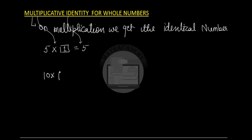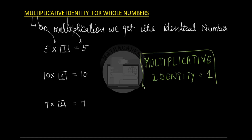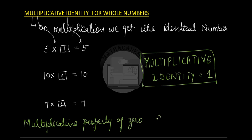Similarly, 10 times 1 gives you 10. The number 1 is called the multiplicative identity because when we multiply any number by 1, the product is identical to the first number. There is also one very important property of 0: when any number is multiplied by 0, the result is always 0. For example, 5 times 0 gives 0, and 7 times 0 gives 0. This is called the multiplicative property of the number 0.